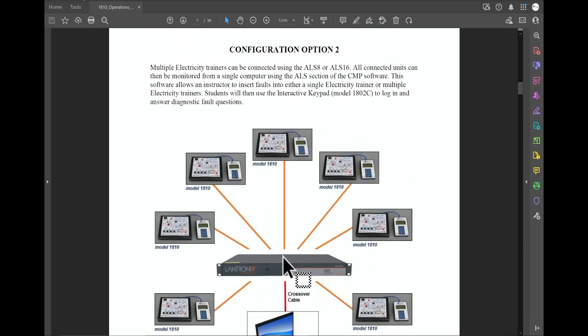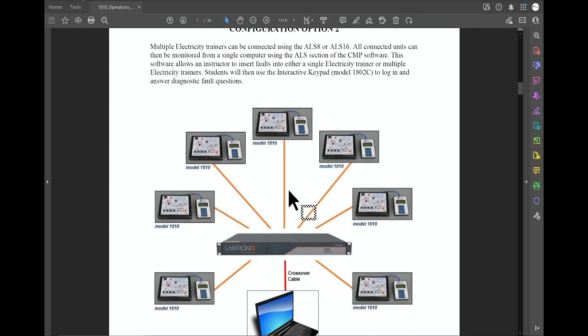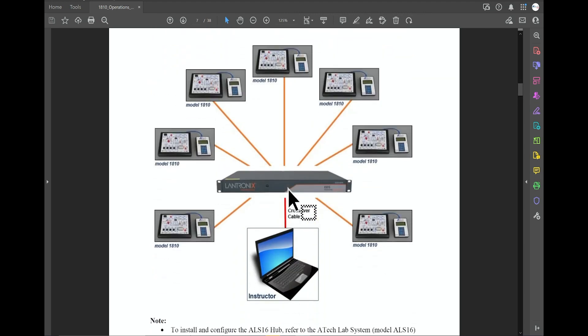You can also use configuration option two without the ethernet system where you're just using the board and the keypad and the written courseware that goes along with it. So let's switch over and check out what the 1810 board looks like.